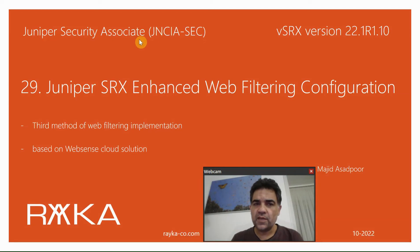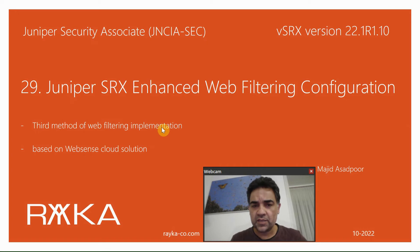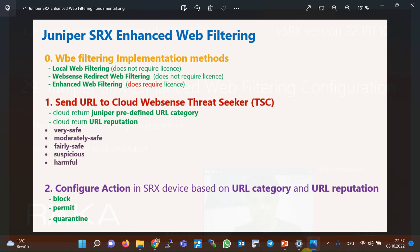Welcome to another video of the Juniper Security Associate course. In this section we will learn how to implement Juniper SRX enhanced web filtering, which is the set method of web filtering implementation. It is based on the Websense cloud solution. URL addresses are forwarded to the cloud Websense ThreatSeeker solution, and URL category and URL reputation are returned from the cloud. On the Juniper SRX device itself, we decide the action based on the URL category and URL reputation.